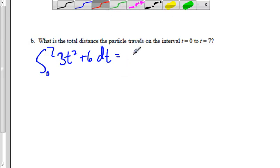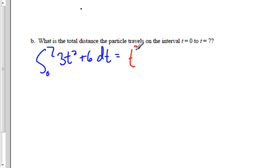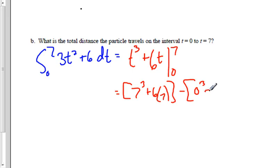Let's do that. We already found the antiderivative: t³ + 6t. I'm going to evaluate this from 0 to 7, so this is going to be equal to the value of the upper limit minus the lower limit.